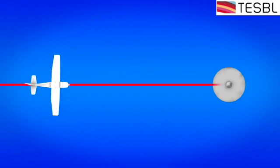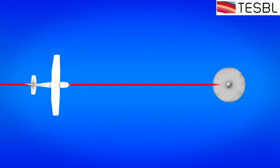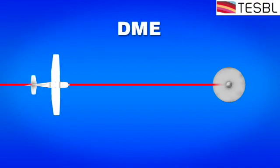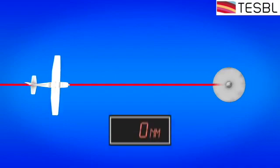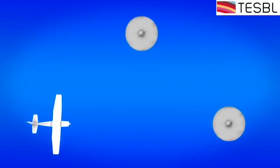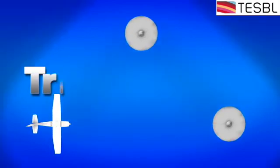By using one VOR, you would know where you are in relation to that VOR. However, you don't know at what point you are along that specific radial. For that, you'd need either distance measuring equipment — DME — or a second VOR. The DME will tell you how far from the VOR you are, pinpointing your location.